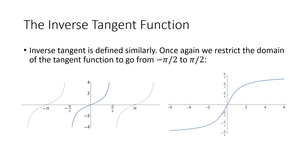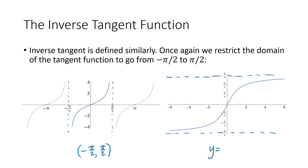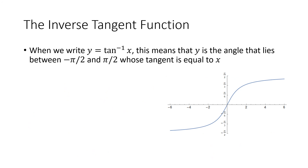The inverse tangent function is defined pretty similarly to inverse sine. We restrict the domain to the open interval from negative pi over 2 to pi over 2 — those endpoints are excluded because they're vertical asymptotes of tangent. When we flip the function over, those vertical asymptotes become horizontal asymptotes, which is a feature of the inverse tangent function. When we write y equals inverse tangent of x, y is specifically the angle between negative pi over 2 and pi over 2 whose tangent equals x.